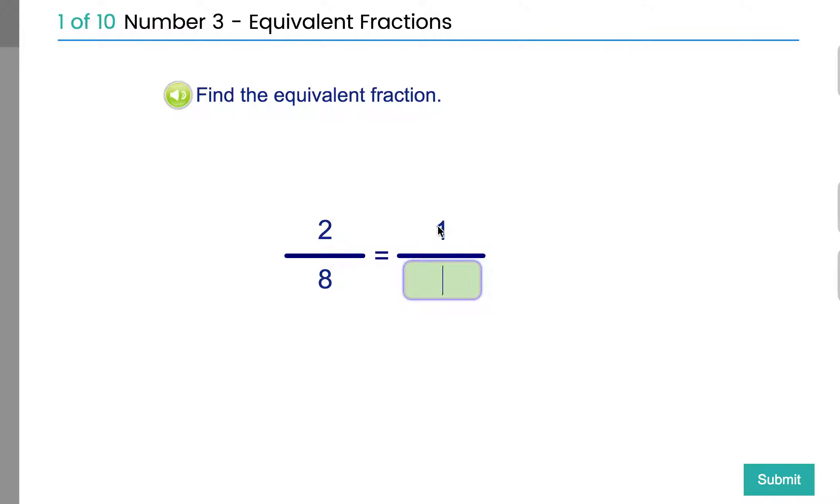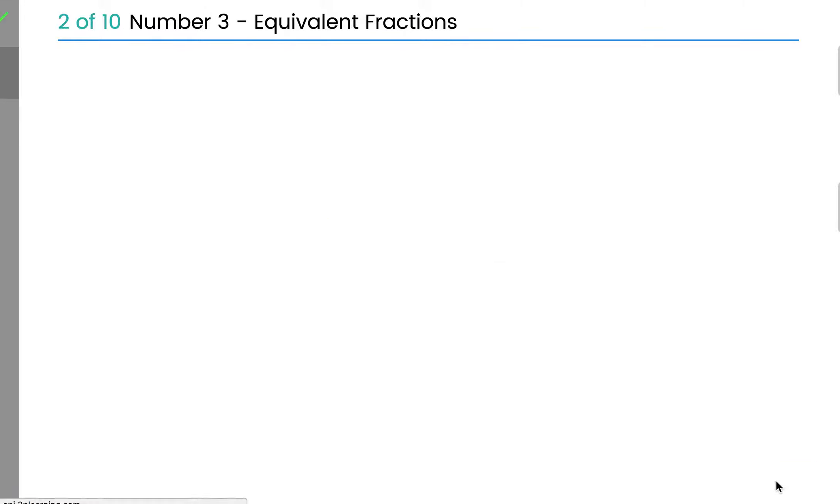So if this goes from 2 to 1, what's happened to it? It's been divided by 2. It's been cut in half. So if the top number, whatever happens to the top number, you have to do to the bottom number as well. So if this gets cut in half from 2 to 1, we have to cut the 8 in half to get 4. Whatever happens to the top number, you do to the bottom. Simple as that.